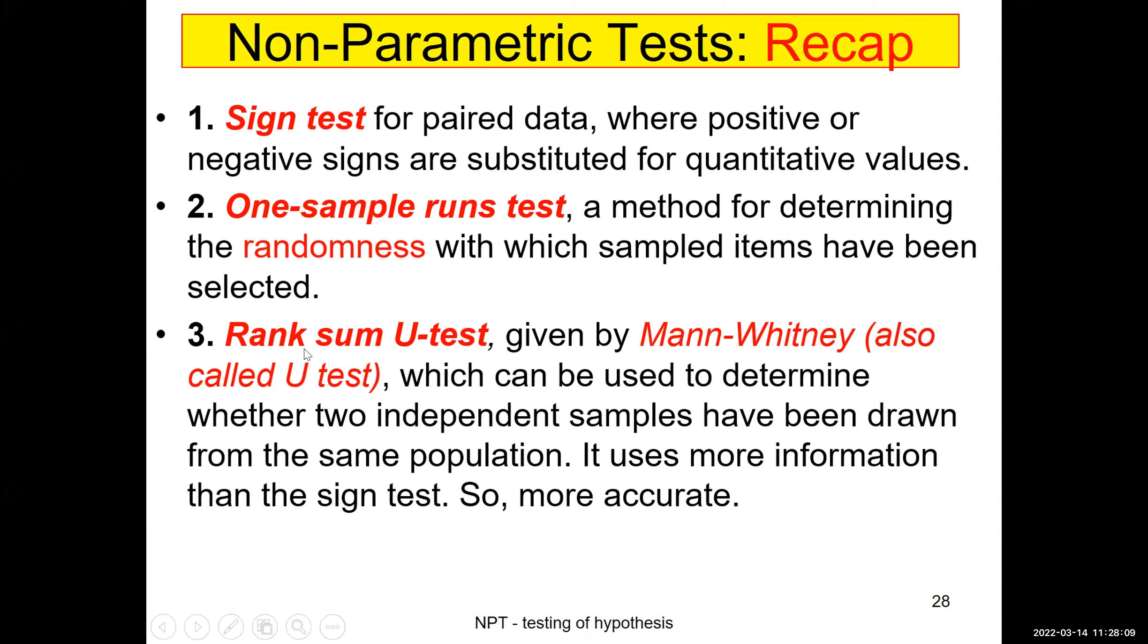Today we'll be using a rank sum test, which uses the statistic U. So that's why we'll be calling it rank sum U test. It is given by two professors, Mann-Whitney. So it is also called as Mann-Whitney rank sum U test. This will help us again to compare two samples. If both the samples are varying in a similar pattern or having almost similar variation, we can presume, assume, as if they come from the same population, same characteristic. As I was telling, it uses more information than the sign test. So we'll be calling this U test comparatively better than sign test and runs test. The last sentence is important for us.